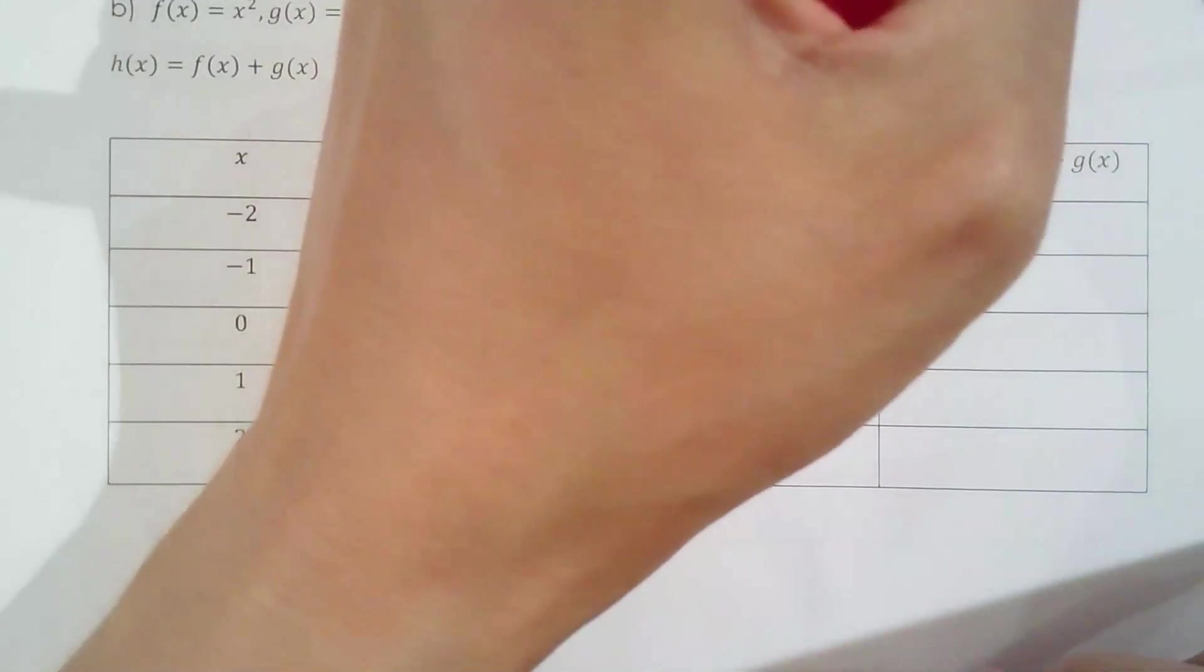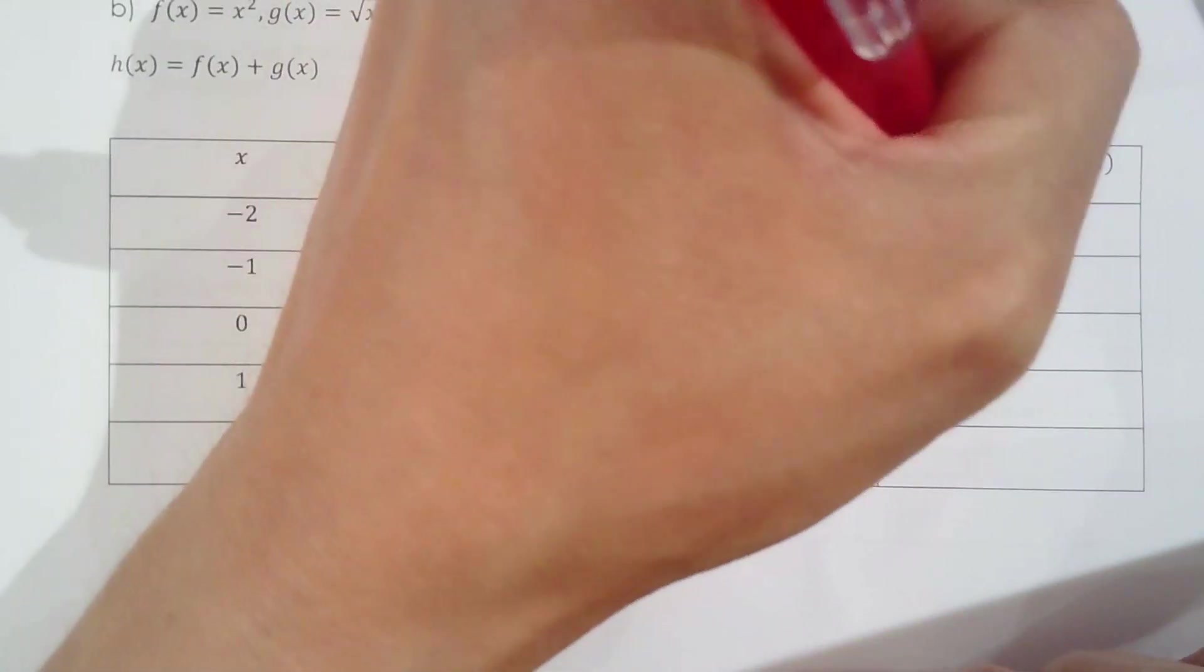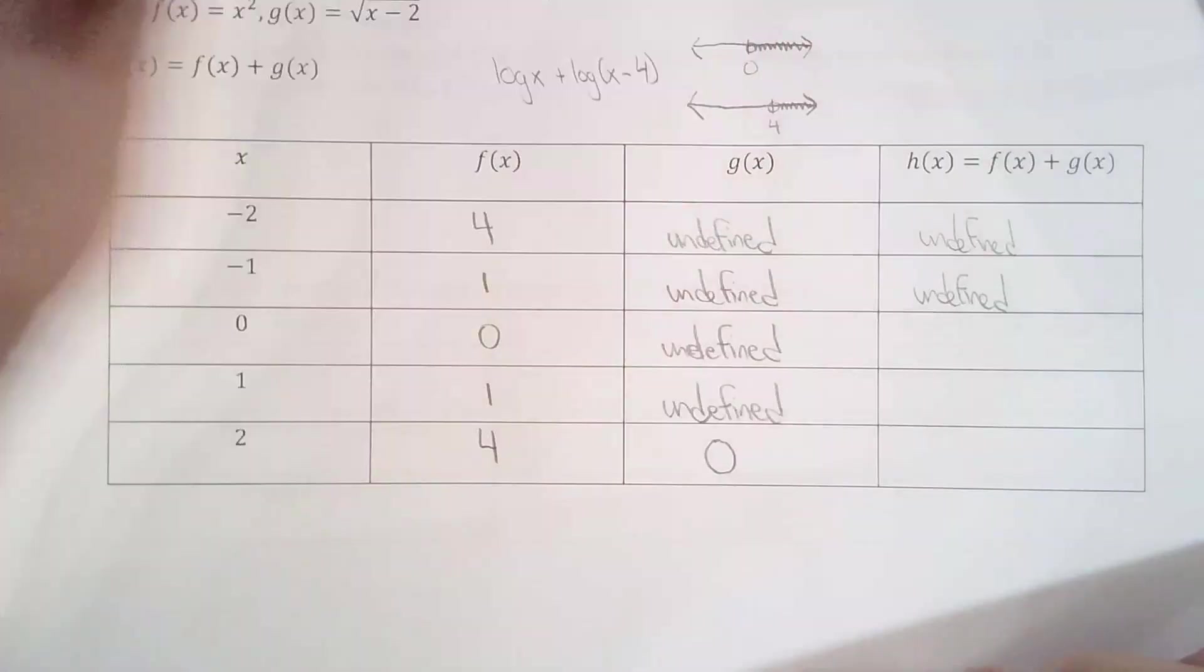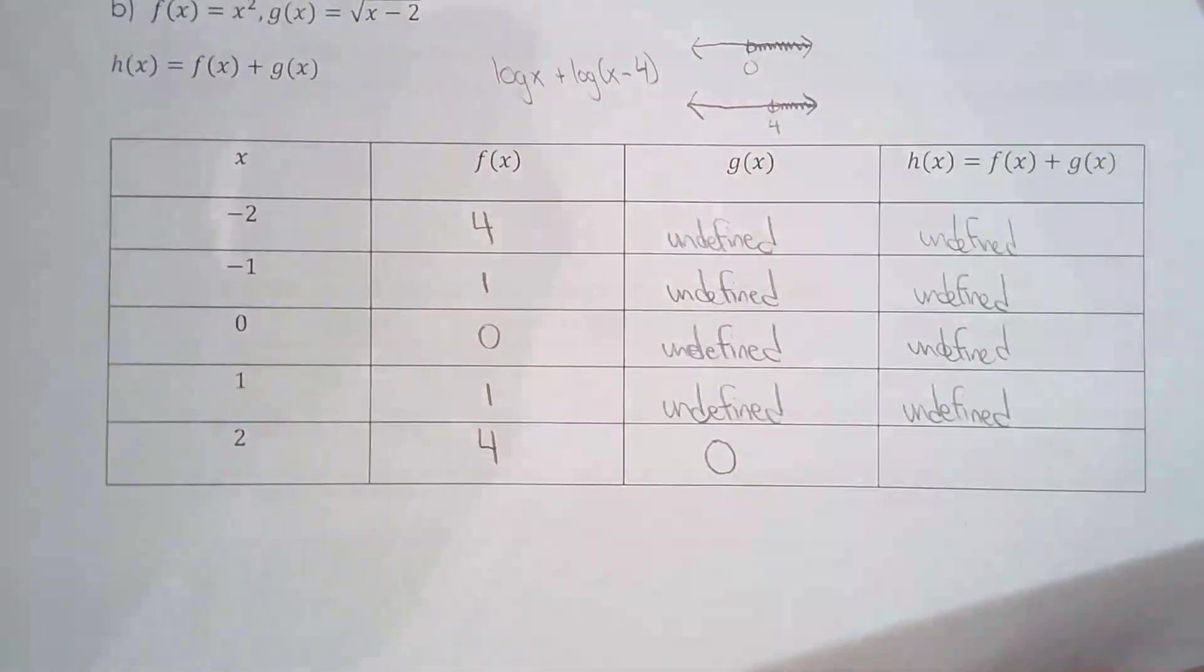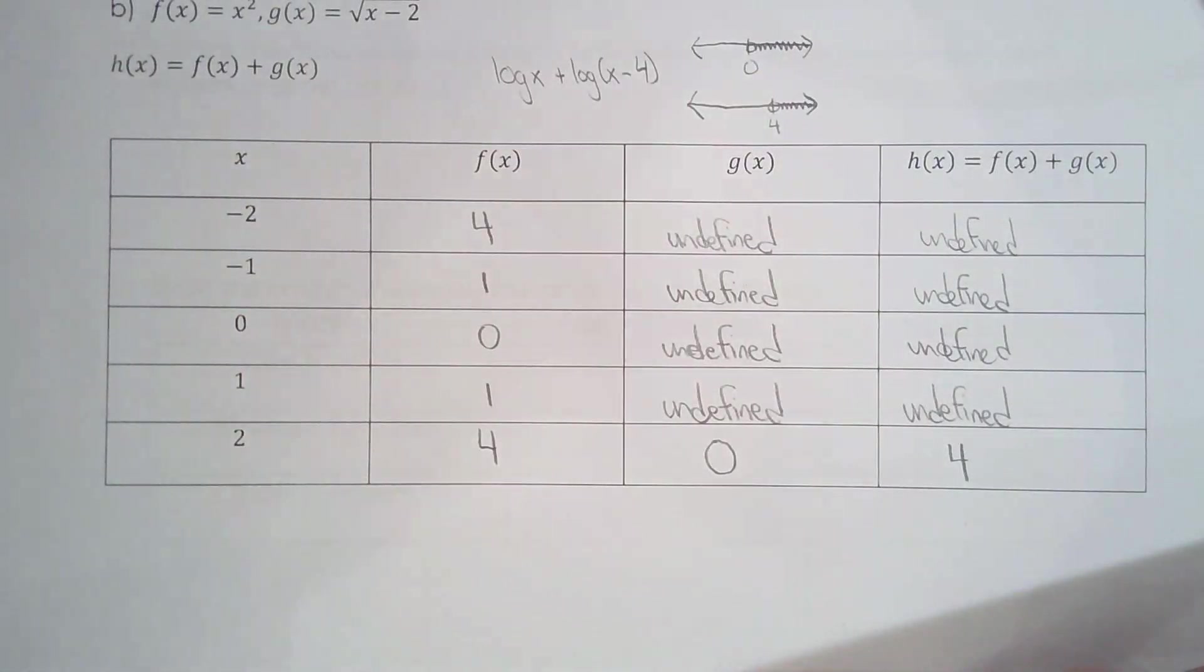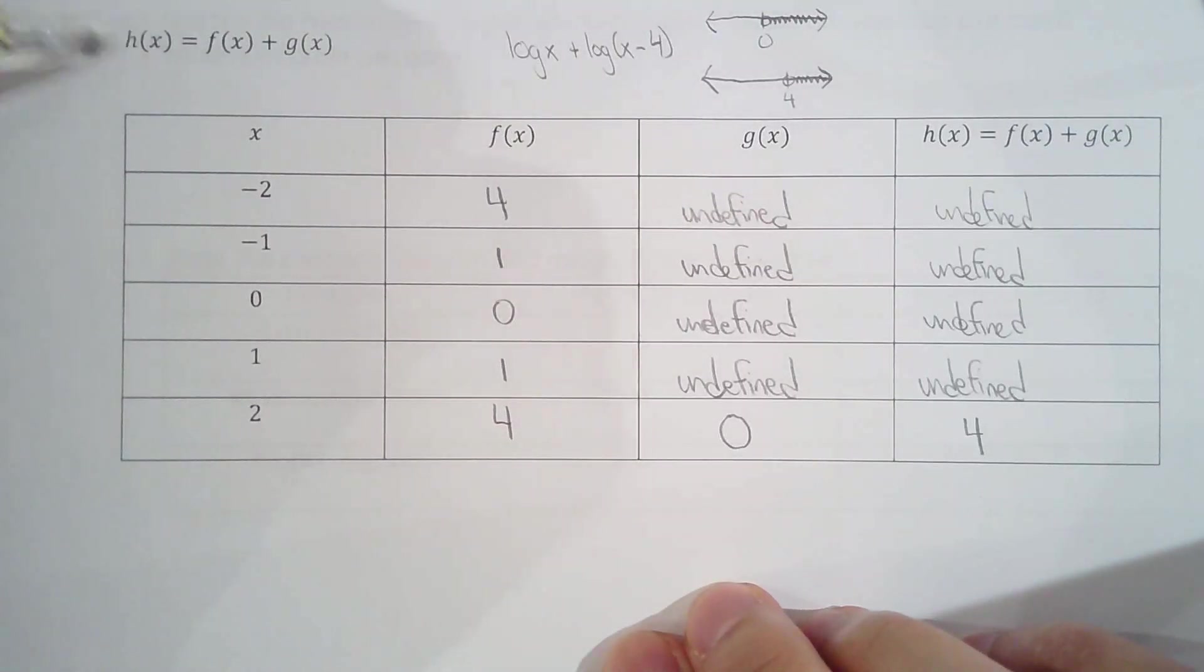These two number lines tell us that this logarithmic expression is defined when x is greater than 4. For example, if I were to evaluate this expression when x is 0, it's undefined because my second term is undefined and some number plus undefined will not give you a defined value. So with all that said, we're saying h of negative 2: undefined, undefined. What do we have here? 0 plus undefined? Undefined. 4 plus 0, I can do that: 4 plus 0 is 4.